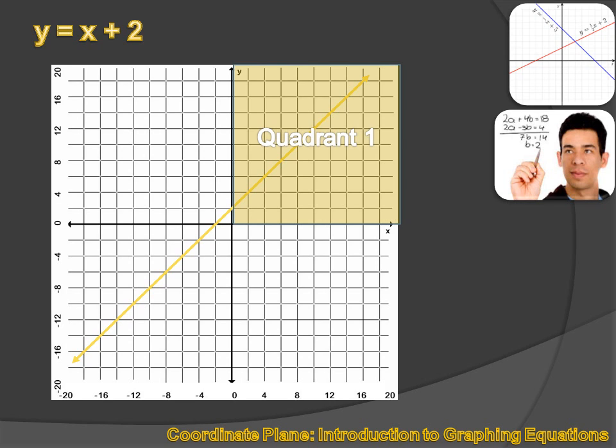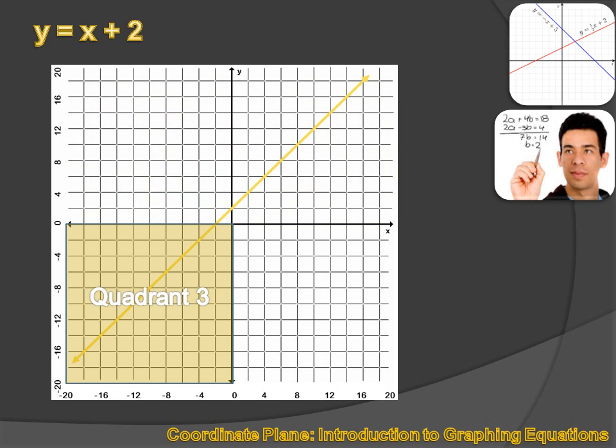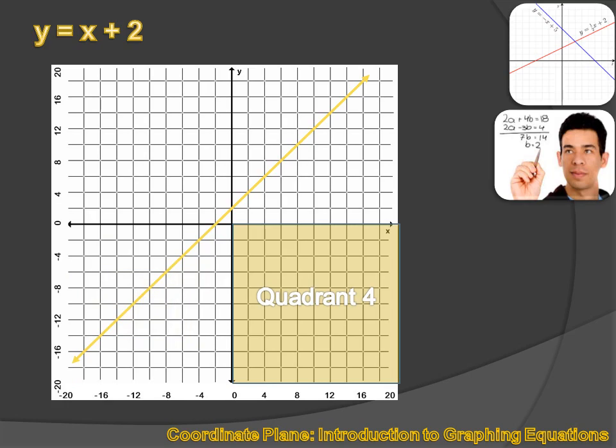And we can define the various sections of this coordinate plane as quadrant 1, quadrant 2, quadrant 3, and quadrant 4.